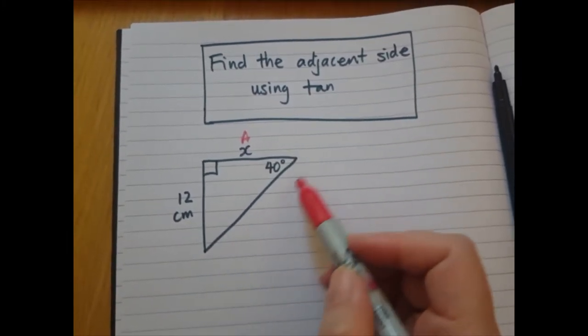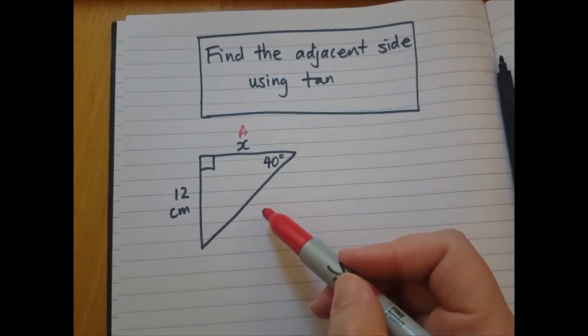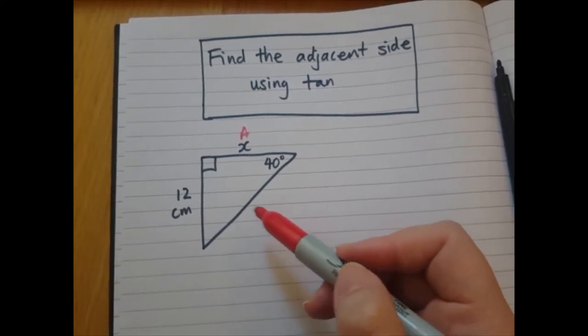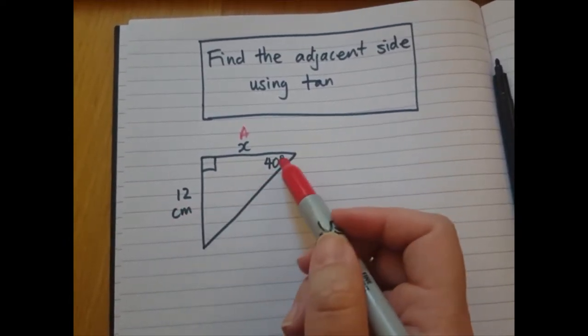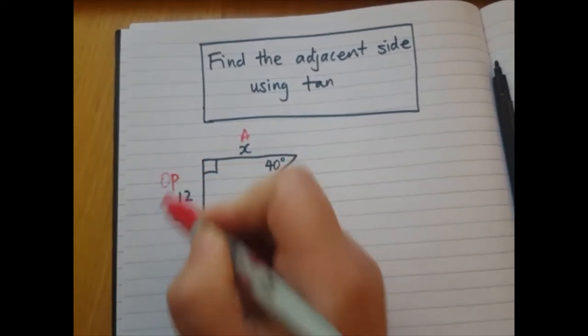This side is the longest side, that's the hypotenuse, but we don't know what it is. Also, don't really care, so I'm going to leave it blank. This side 12 is opposite the angle, so I'm going to label it opposite.